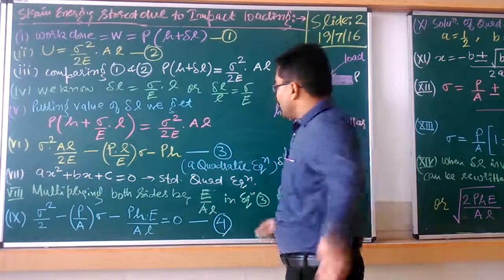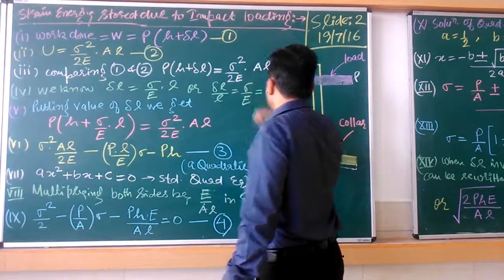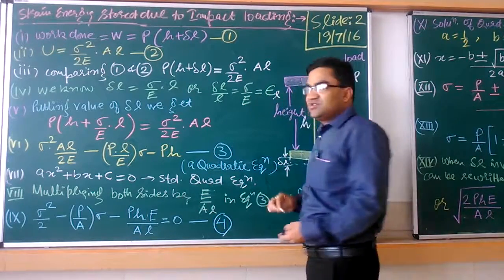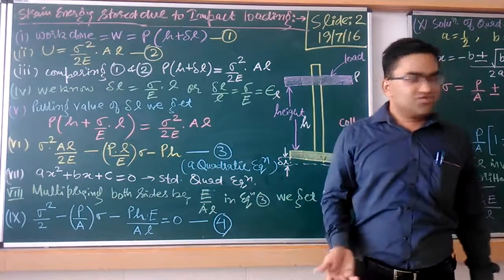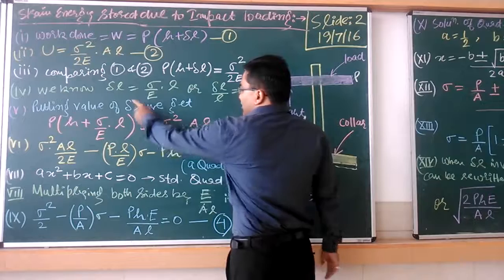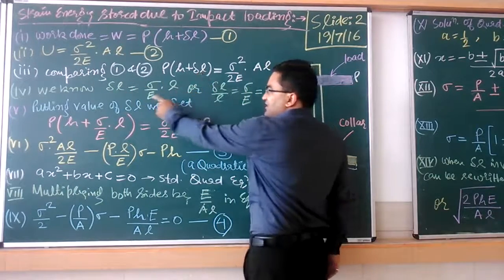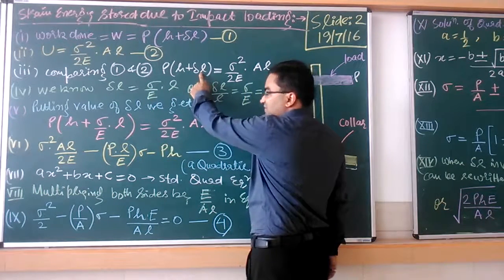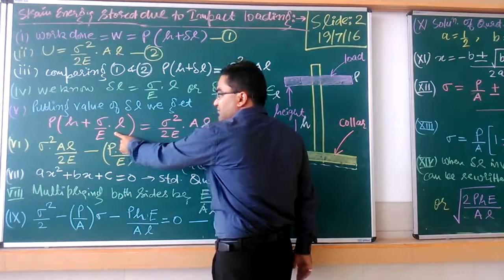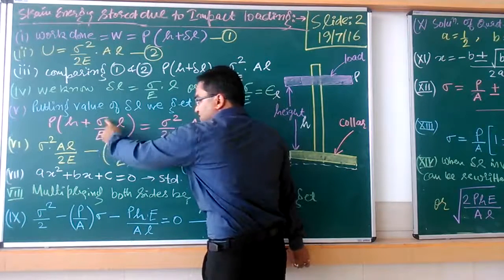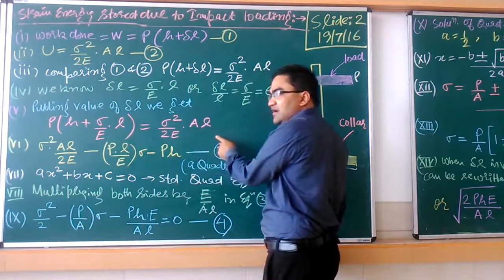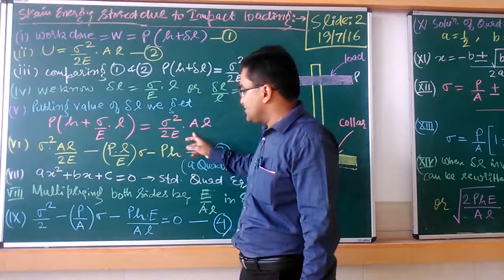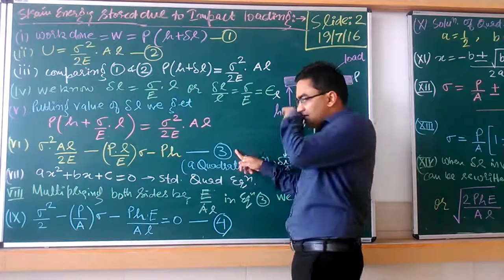By substituting the value of delta L equal to sigma by E into L into the equation, we get: P into (h plus sigma by E into L) equals sigma squared upon 2E into A into L. Opening this equation and rearranging gives equation number 3. By multiplying both sides by E divided by A and L, we obtain equation number 4: a quadratic equation in sigma. This is the standard final quadratic equation from which we obtain two values of sigma — the stress induced in the material due to impact loading.